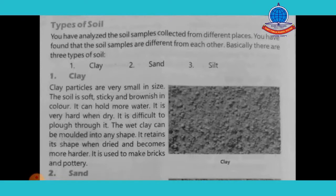Clay particles are very small in size. The soil is soft, sticky and brownish in colour. It can hold more water. It is very hard when dry and difficult to plow. The wet clay can be molded into any shape. It retains its shape when dried and becomes harder.